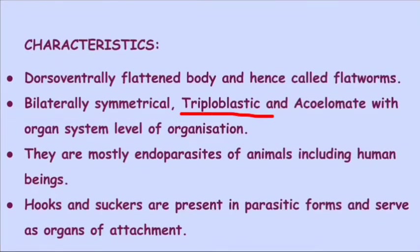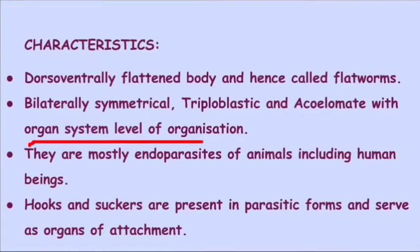They are also triploblastic — 'tri' means three, referring to three germ layers: ectoderm, endoderm, and mesoderm. If all three layers are present, those organisms are called triploblastic animals. Next is acoelomate — 'a' means absence, and coelom means body cavity. So if the body cavity is absent, the term acoelomate is used.